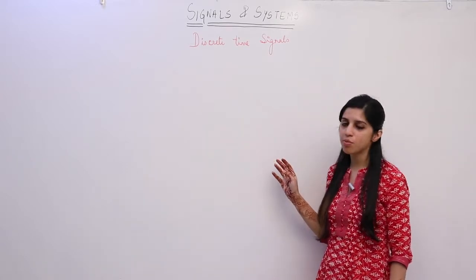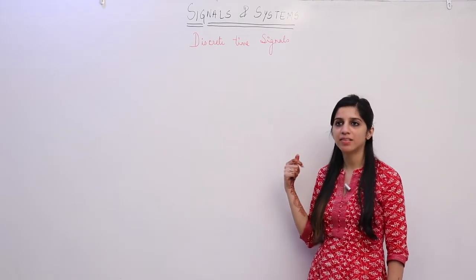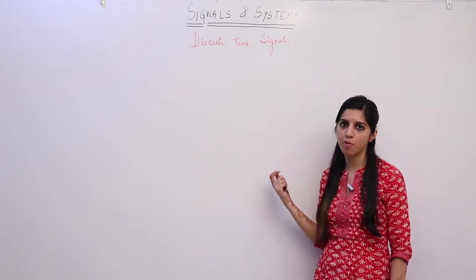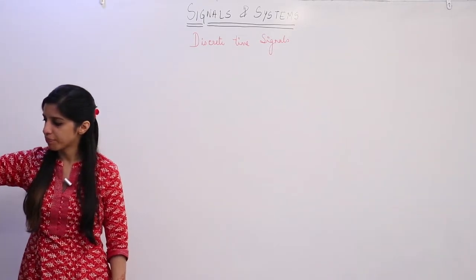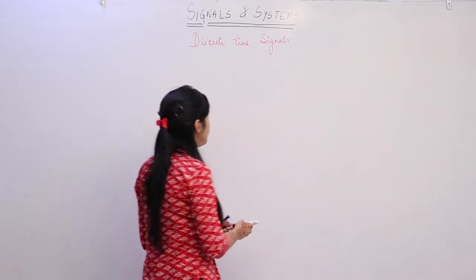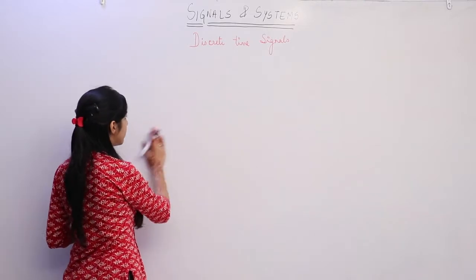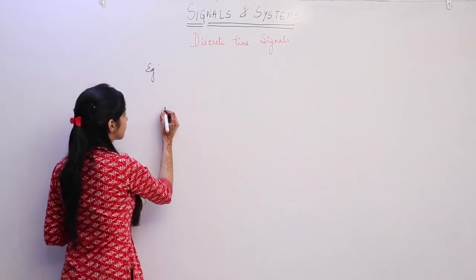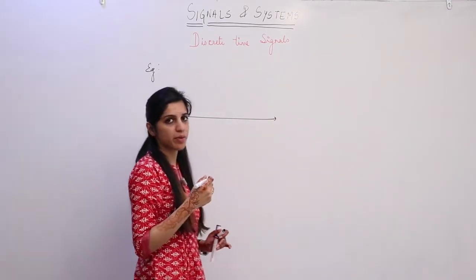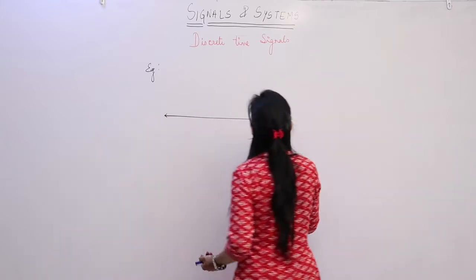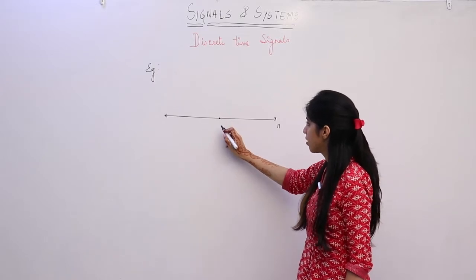In this lecture we are going to look at some forms of representation of discrete time signals and various time operations that we are performing on discrete time signals. We are taking a discrete time signal as an example, and we will learn ways of representation through that signal. The independent variable axis n is going to be an integer, so a discrete time signal is a function of integer n.